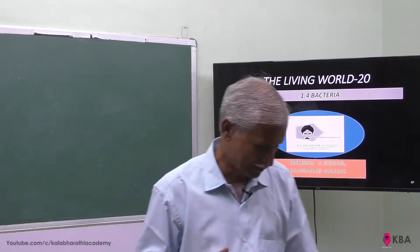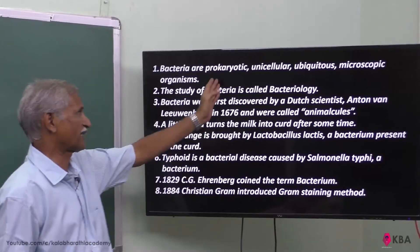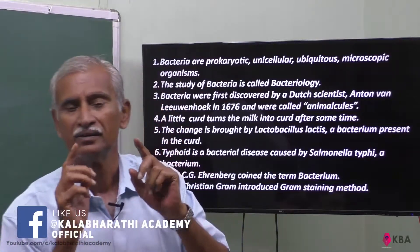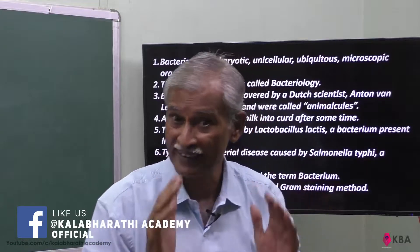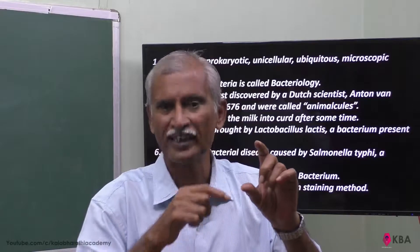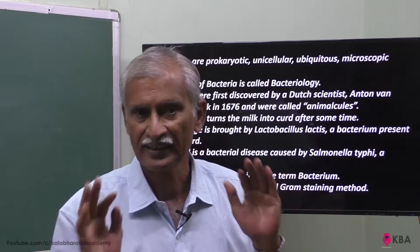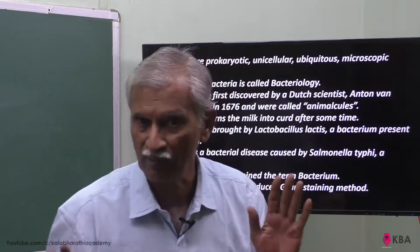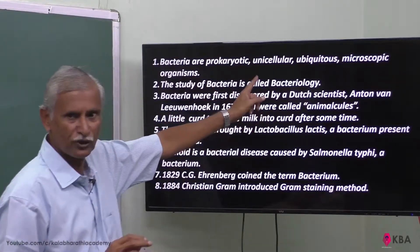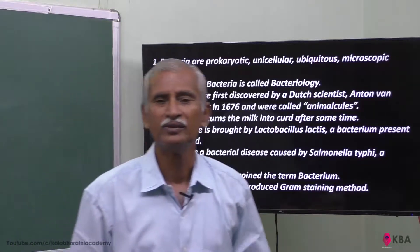Bacteria are prokaryotic. Prokaryotic means the DNA is not bound by a nuclear membrane — it is floating in the cytoplasm of the bacterial cell. So bacteria are prokaryotic, unicellular, and ubiquitous. Ubiquitous refers to their habitat — bacteria are found everywhere.